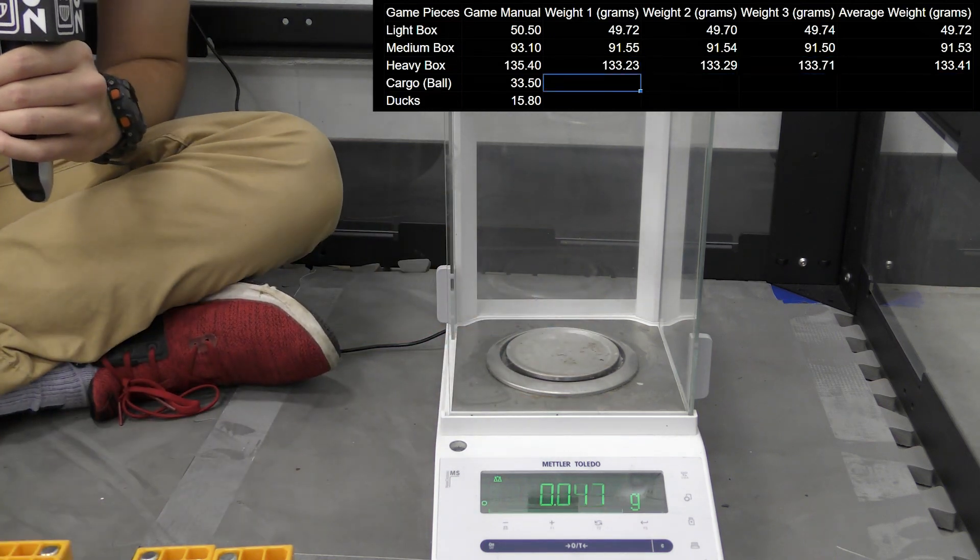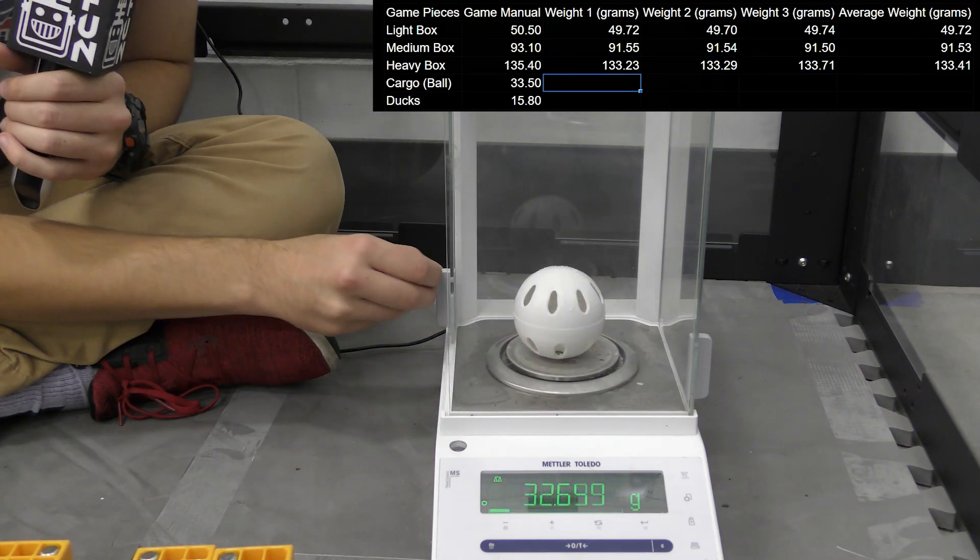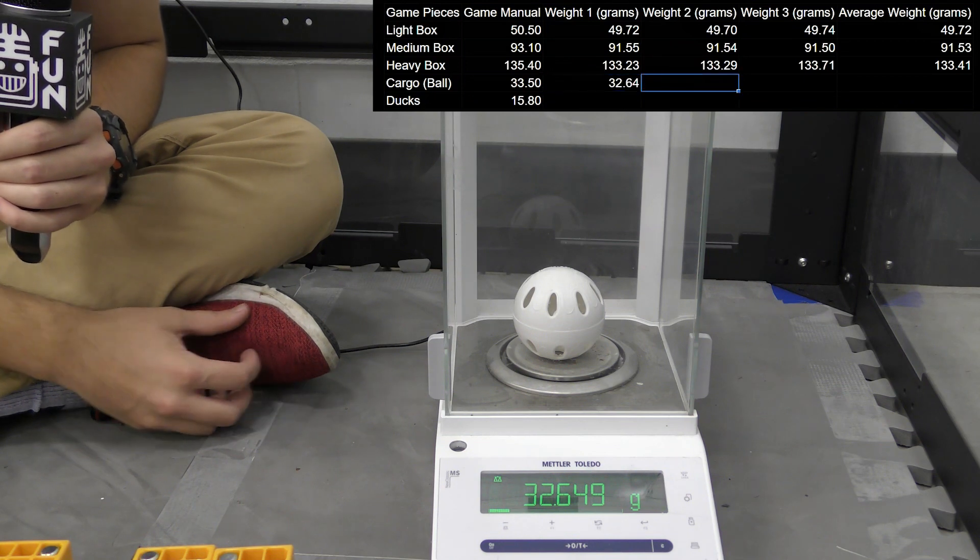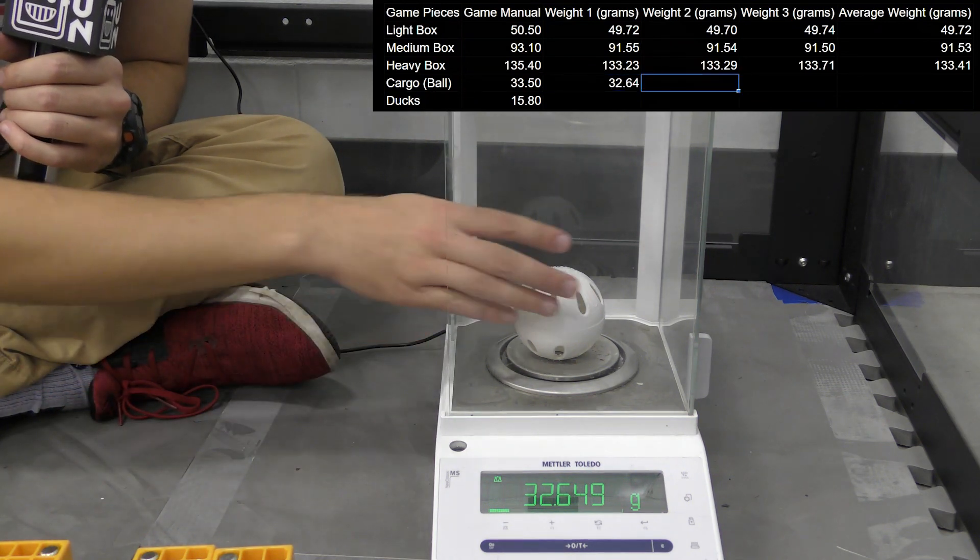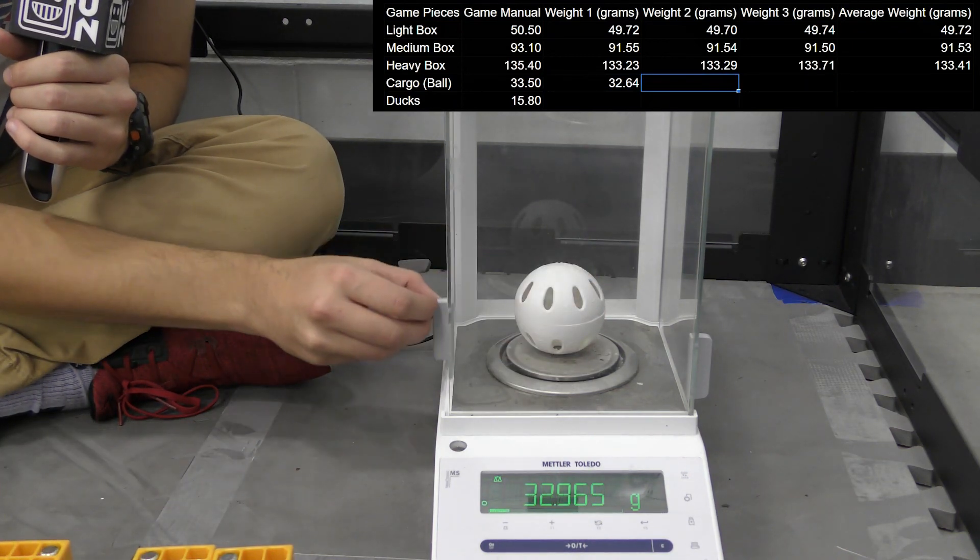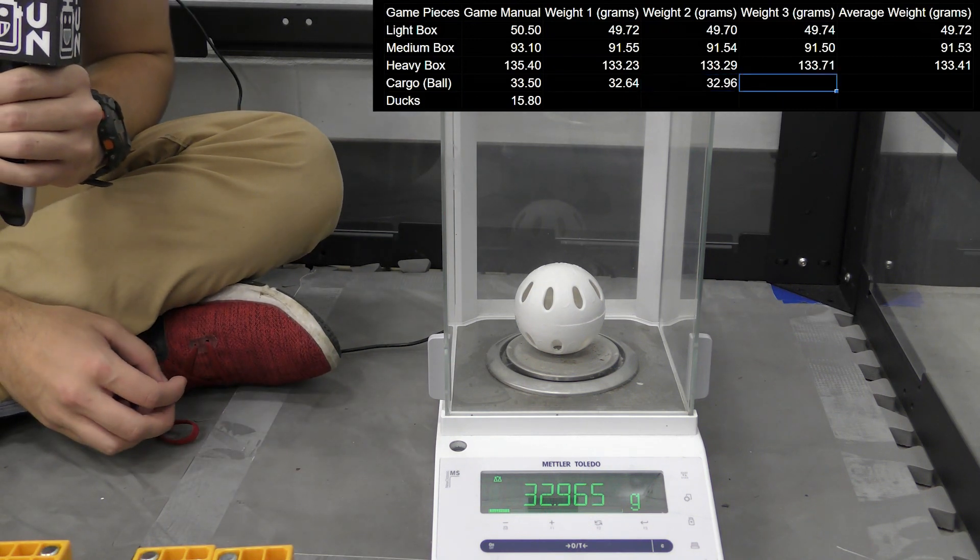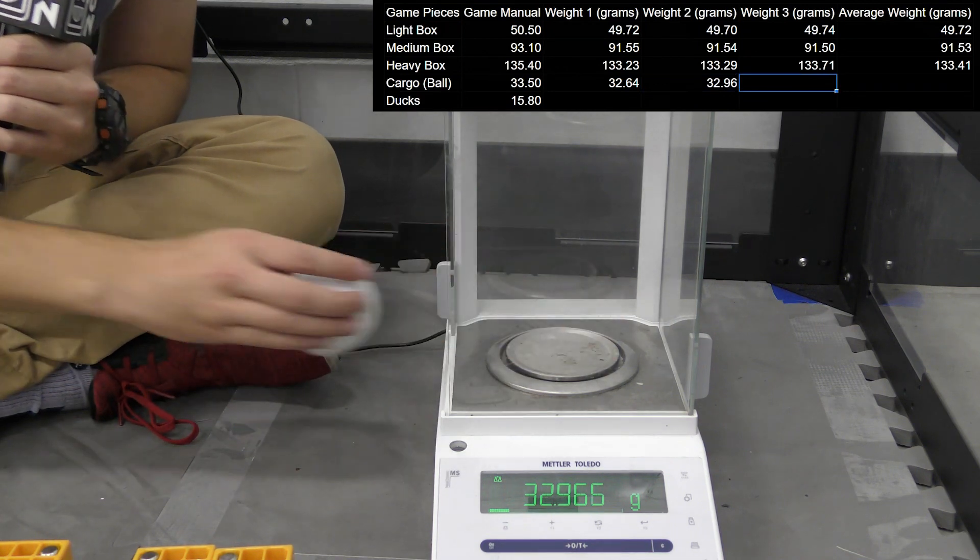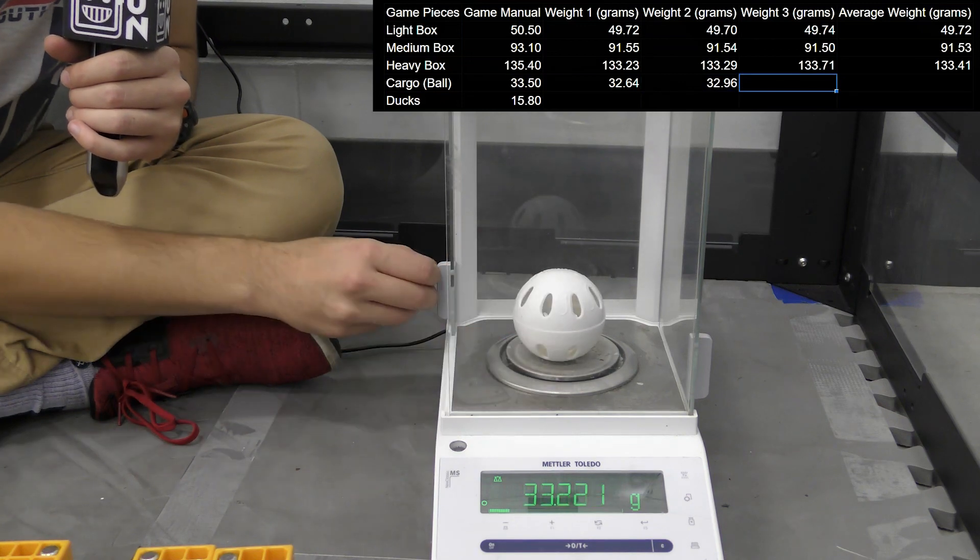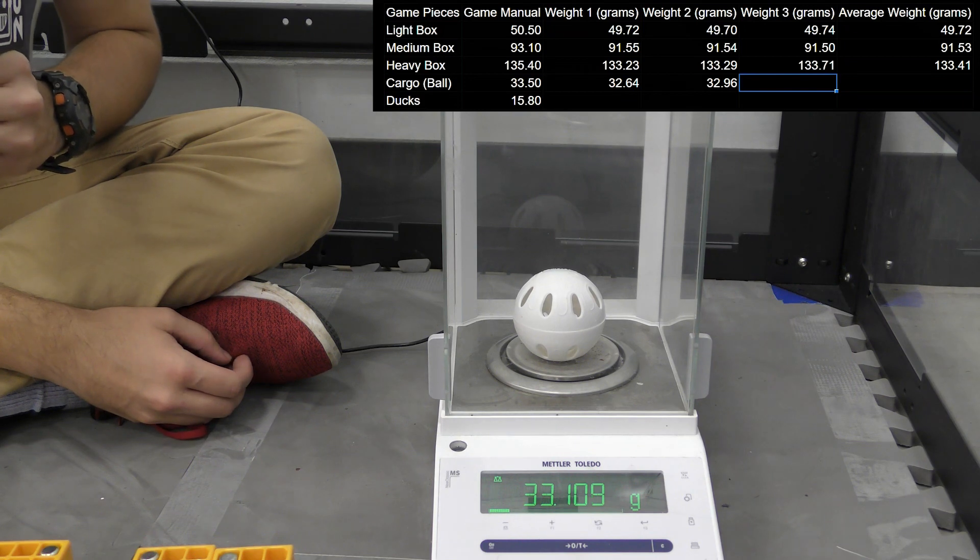So next we'll go on to the balls. So for the first ball we have 32.64 grams. For the second ball we have 32.96 grams. And for the third ball we got 33.10 grams.